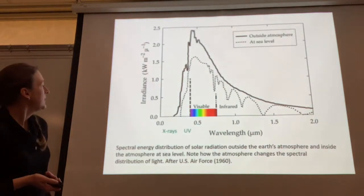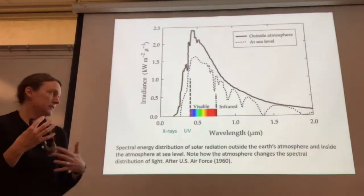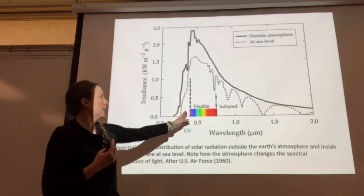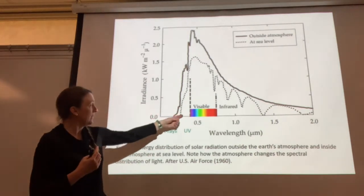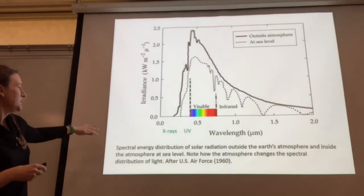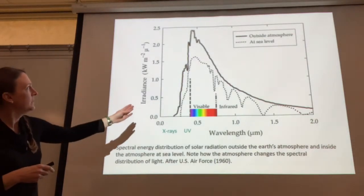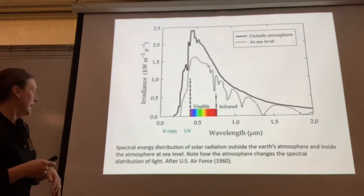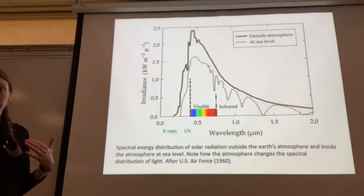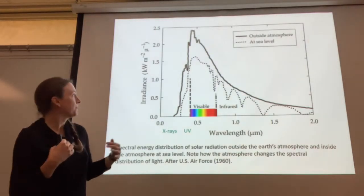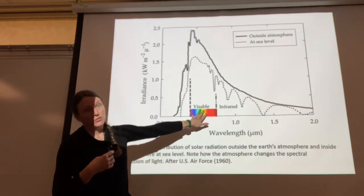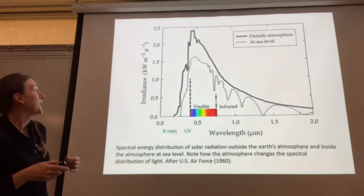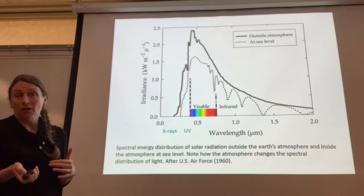Here you can see the different wavelengths of light — this is the visible spectrum. On the red side we go into the infrared; on the purple side we go into the ultraviolet and x-ray range. You can see the spectral energy distribution of solar radiation outside the atmosphere versus inside at sea level, and that most of the energy reaching Earth's surface is in the visible light spectrum, which is good news for plants — but not all of that makes it through water.